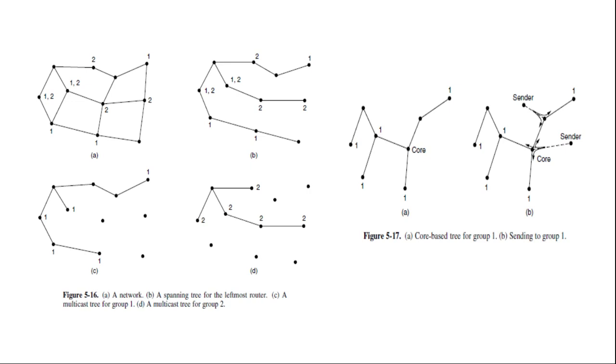For example, in figure 5.17 B the packet from the sender on the right-hand side reaches the top right group member by the core in three hops instead of directly. The inefficiency depends on where the core and senders are located, but often it is reasonable when the core is in the middle of the senders.